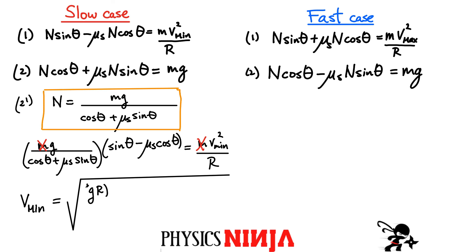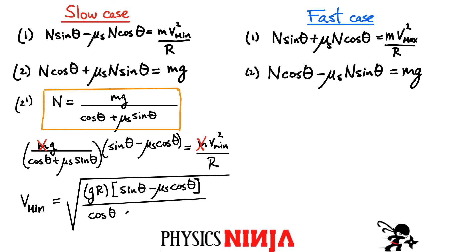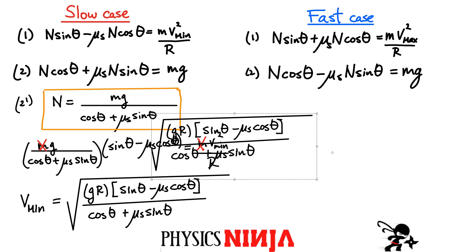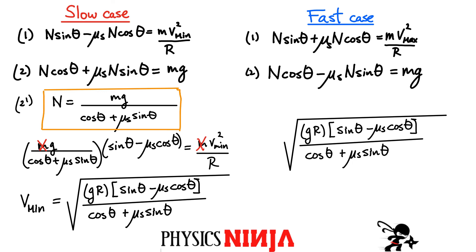The minimum speed you can safely go around the banked curve with friction is: v_min equals the square root of g·r times (sin θ minus μ_s cos θ) divided by (cos θ plus μ_s sin θ). To write down the expression for maximum speed, you follow the same steps but swap the signs of the friction terms: the numerator becomes (sin θ plus μ_s cos θ) and the denominator becomes (cos θ minus μ_s sin θ), giving v_max.